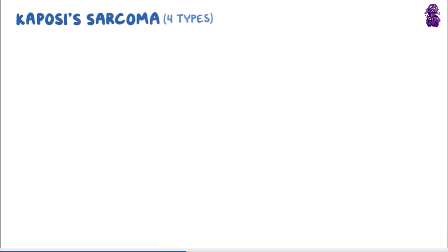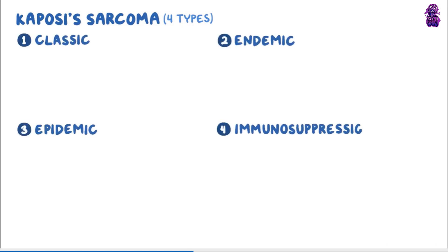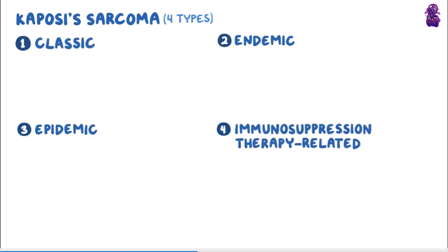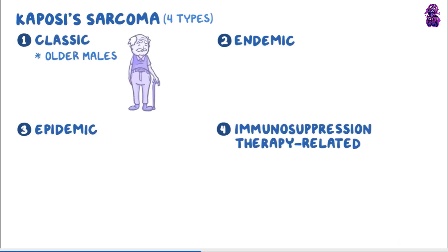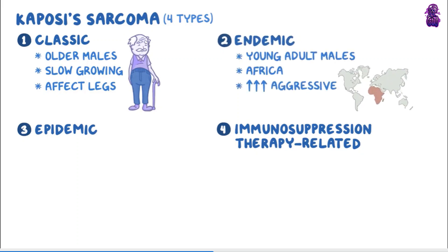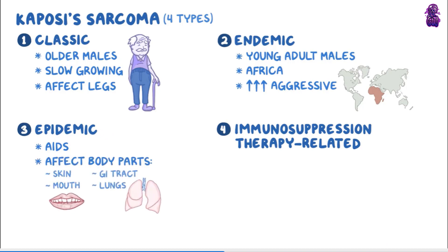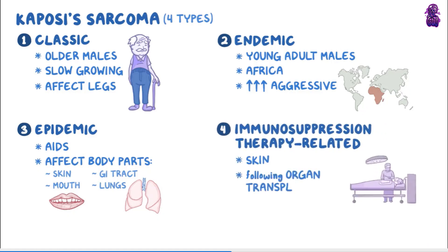HHV-8 causes a disease called Kaposi's sarcoma, which is classified into four types depending on the clinical circumstances in which it develops: classic, endemic, epidemic, and immunosuppression therapy related. Classic Kaposi's sarcoma usually affects older males, it's slow growing, and it usually affects the legs. Endemic Kaposi's sarcoma occurs in young adult males who live in Africa and can be more aggressive. Epidemic Kaposi's sarcoma is associated with AIDS and can affect many body parts, such as skin, mouth, GI tract, or lungs. Finally, immunosuppression therapy related Kaposi's sarcoma affects the skin, and it usually develops following organ transplantation.